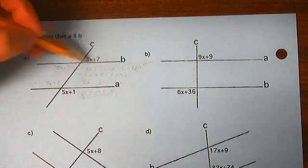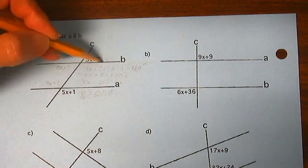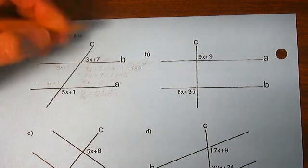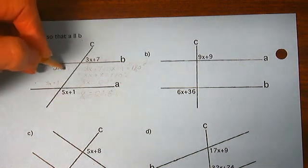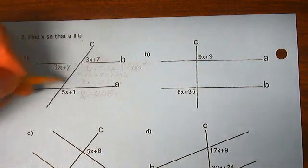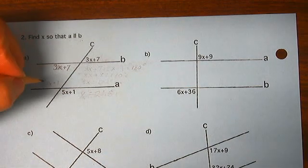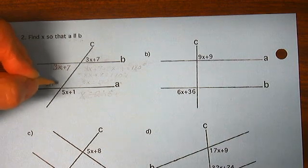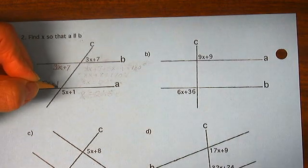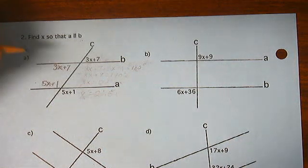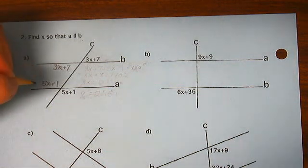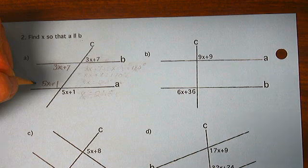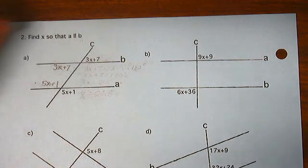3X plus 7 makes a vertical angle here, so this is 3X plus 7. We have vertical angles here. Vertical angles are congruent, so this is 5X plus 1. We know if same side interior angles are supplementary, then the lines are parallel.